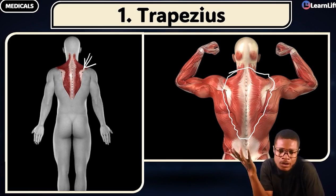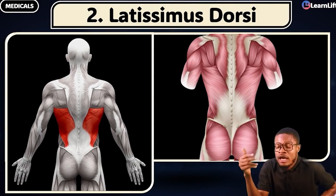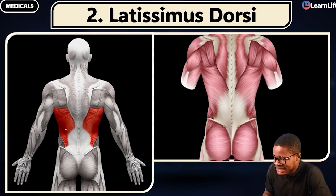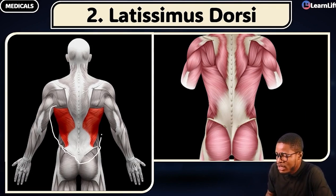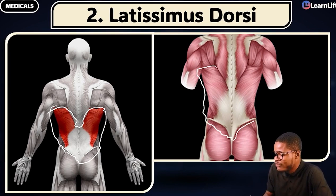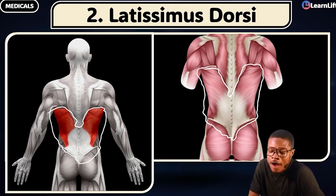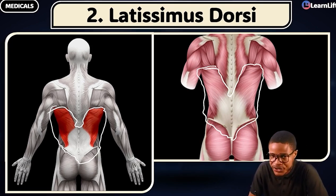The next muscle is the latissimus dorsi. You can see it here — it's a large, massive muscle going into the lower back region. Latissimus dorsi: lower back. Trapezius: upper back. Get that very clearly — upper back is trapezius, lower back is latissimus dorsi.